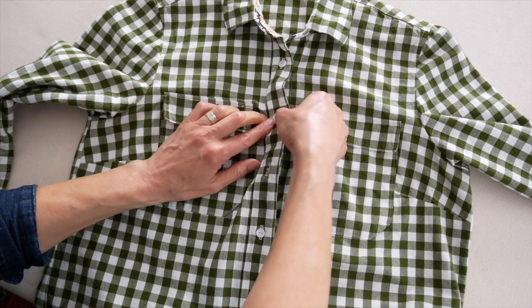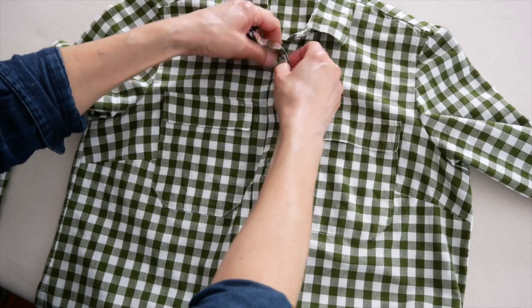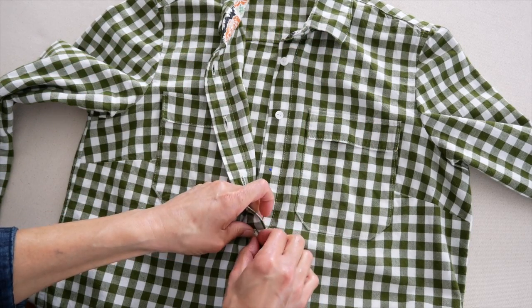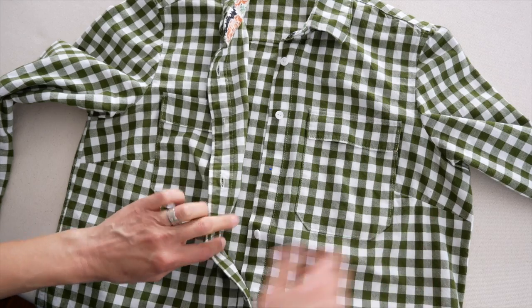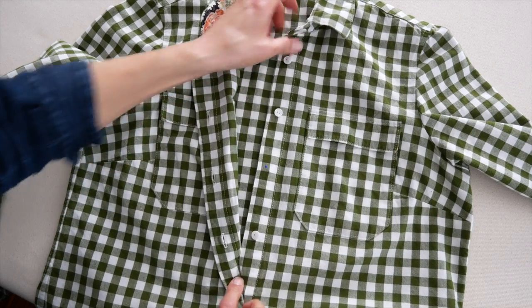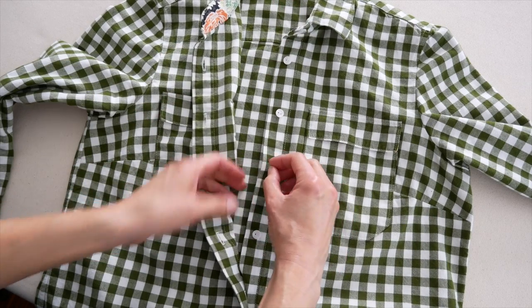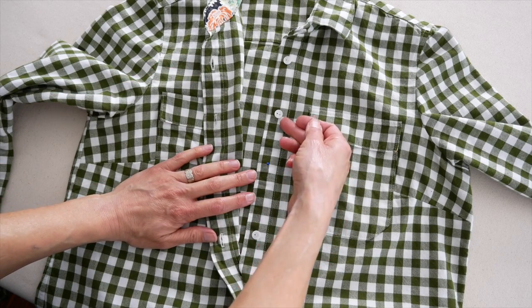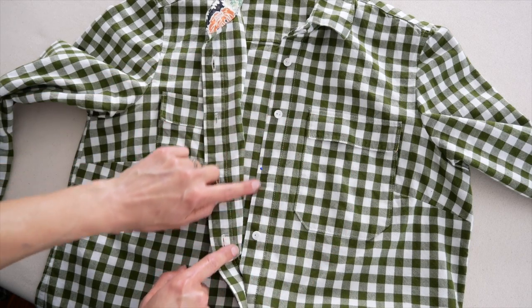And once you've measured down one-eighth inch from the buttonhole, go ahead and unbutton a few of the buttons to make sure that the pin placement, where the button is going to go, is lined up with the other buttons. Because sometimes with that shaping, it doesn't, when it's not laying quite flat, it doesn't actually go in the same line.